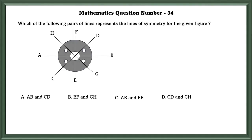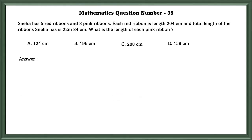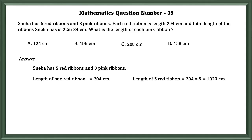Mathematics question number 34. Which of the following pairs of lines represent the line of symmetry for the given figure? Here in this figure, AB and EF represent the line of symmetry. Mathematics question number 35. Sneha has 5 red ribbons and 8 pink ribbons. Each red ribbon is length 204 cm and the total length of the ribbon Sneha has is 22 meter 84 cm. What is the length of each pink ribbon? Length of 1 red ribbon is equal to 204 cm. So to find 5 red ribbons we have to multiply.